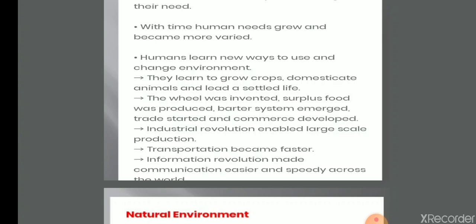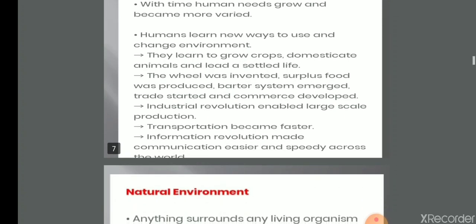The wheel was invented, surplus food was produced, barter system emerged—meaning exchange of things—trade started and commerce developed. Industrial revolution enabled large-scale production. Transportation became faster. Information revolution made communication easier and speedy across the world.